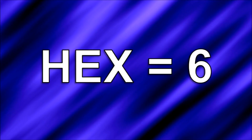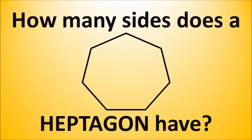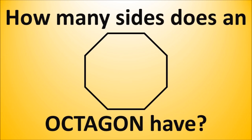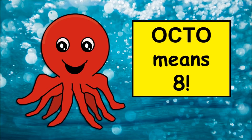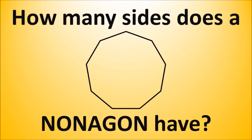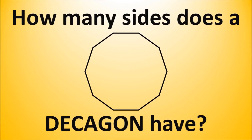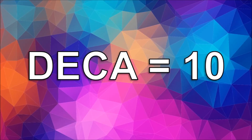How many sides does a heptagon have? Seven — hepta means seven. How many sides does an octagon have? Eight — octo means eight. How many sides does a nonagon have? Nine — nona means nine. How many sides does a decagon have? Ten — deca means ten.